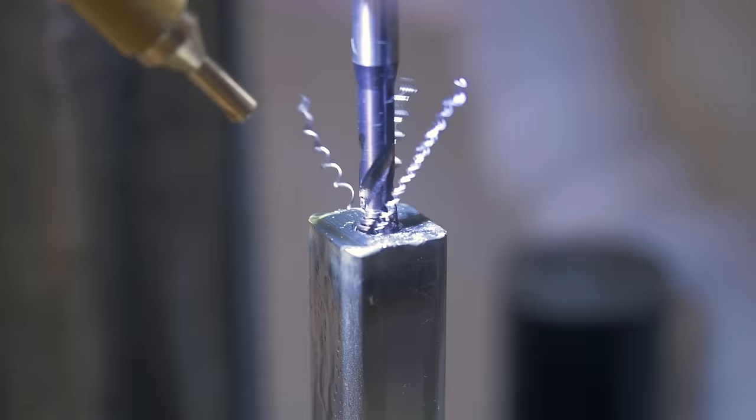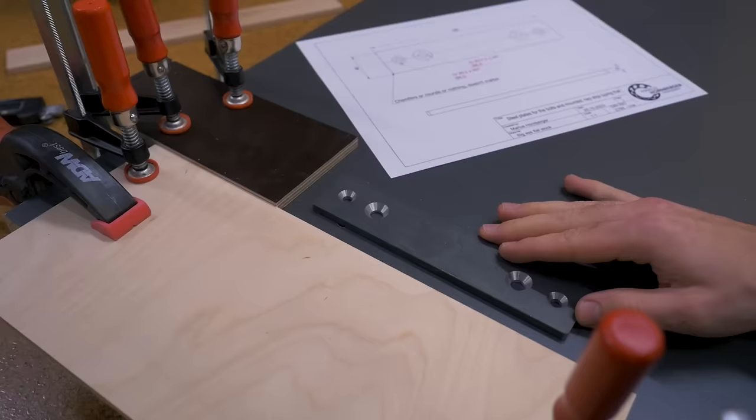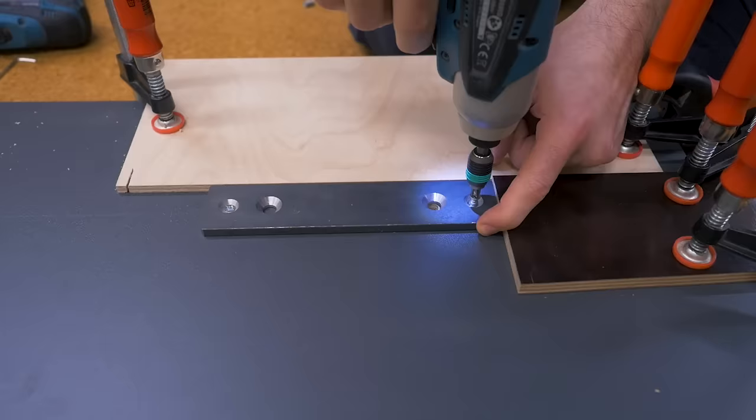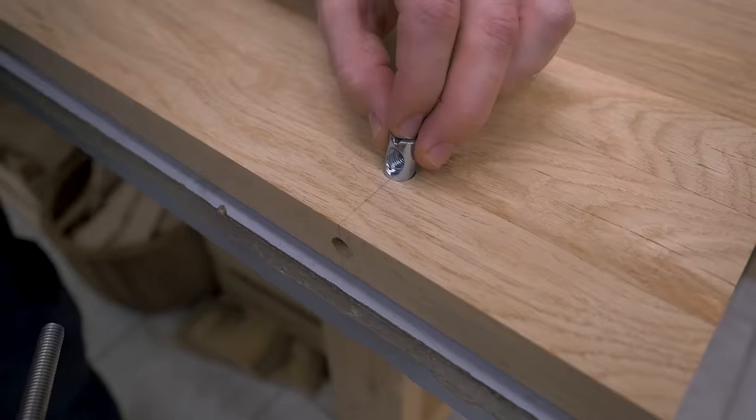But before I start to finish them up, I want to mount them and see if anything needs changes. So similar to before, I made steel plates for the bolts on the back and mounted them accordingly. The top shelf gets the same holes drilled for the barrel nuts and then I can mount it.